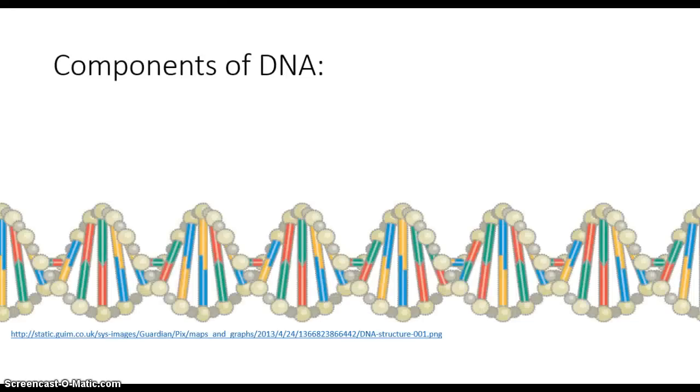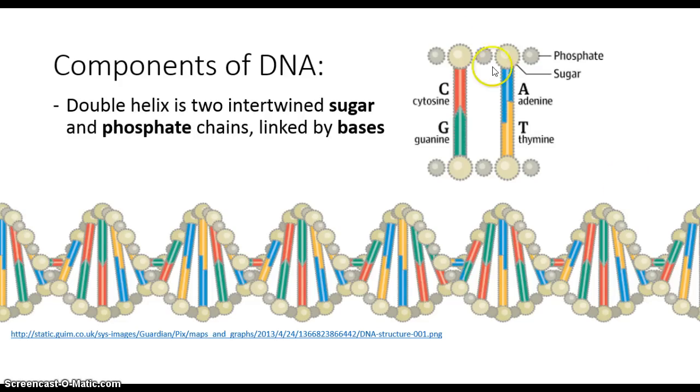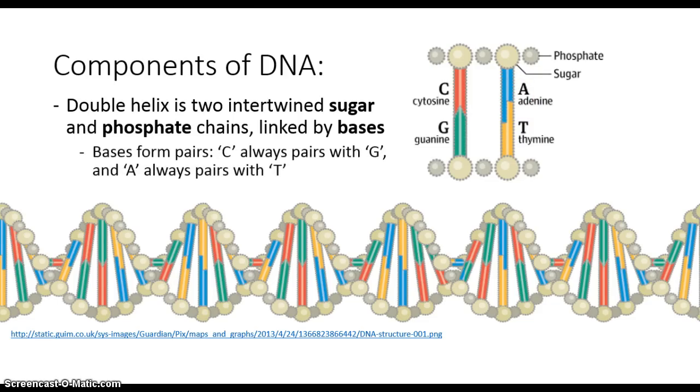There are a number of components of DNA that we can see here. First, the structure is a double helix. This is one chain, and this is the other. These chains are made of alternating sugars and phosphates. In between them, we have these bases that form pairs. The bases follow certain rules: cytosines always bond with guanines on the other chain. The adenines always bond with thymines on the other chain.